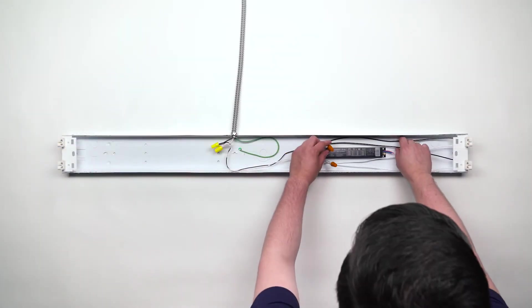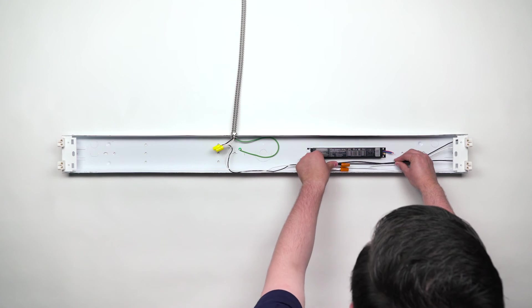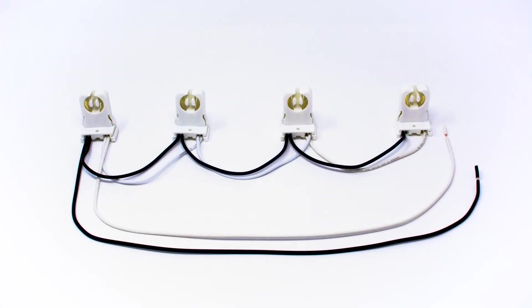In fixtures with multiple tubes, you may group the wires together before connecting to line or neutral. Or you may also daisy-chain them, as shown here, using the extra terminals on the lamp holders.